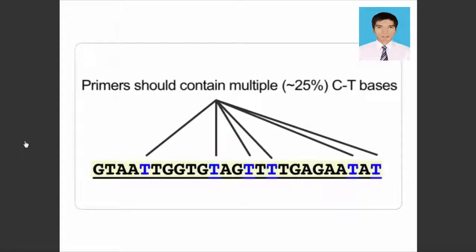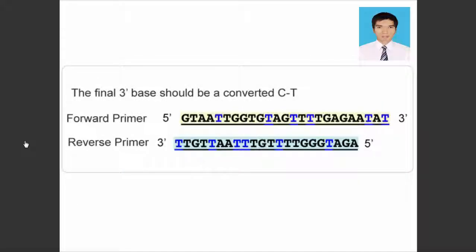Primers should contain multiple, approximately 25%, C to T bases to ensure conversion specificity. The final base of the 3 prime end should be a C to T to ensure amplification of converted DNA.